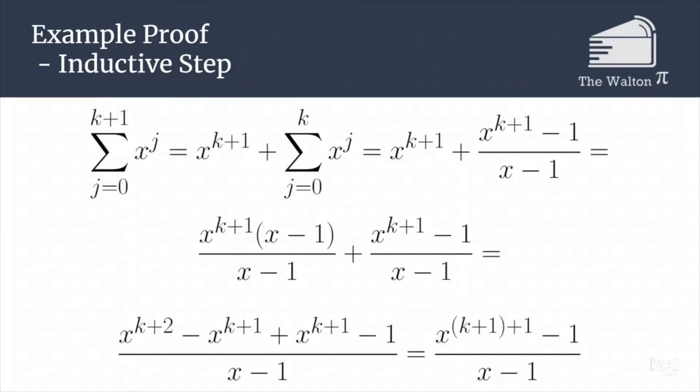Those x to the k plus 1 terms cancel, so we are left with x to the k plus 1 plus 1 minus 1, all over x minus 1. This is precisely the form that we wanted, so that means we have completed our inductive step.